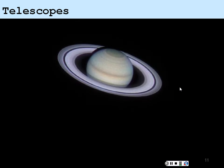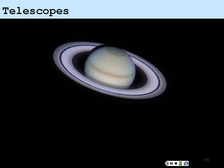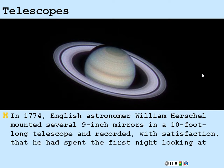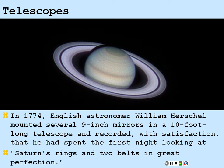Telescopes. Say you want to look out in the universe and look at objects in the sky and one of the more famous objects would be Saturn and Saturn's rings. In 1774, English astronomer William Herschel mounted several nine-inch mirrors in a ten-foot-long telescope and recorded with satisfaction that he had spent the first night looking at Saturn's rings and two belts in great perfection. And you can tell that since he saw the two main belts that he indeed was looking at Saturn with a very good resolution.